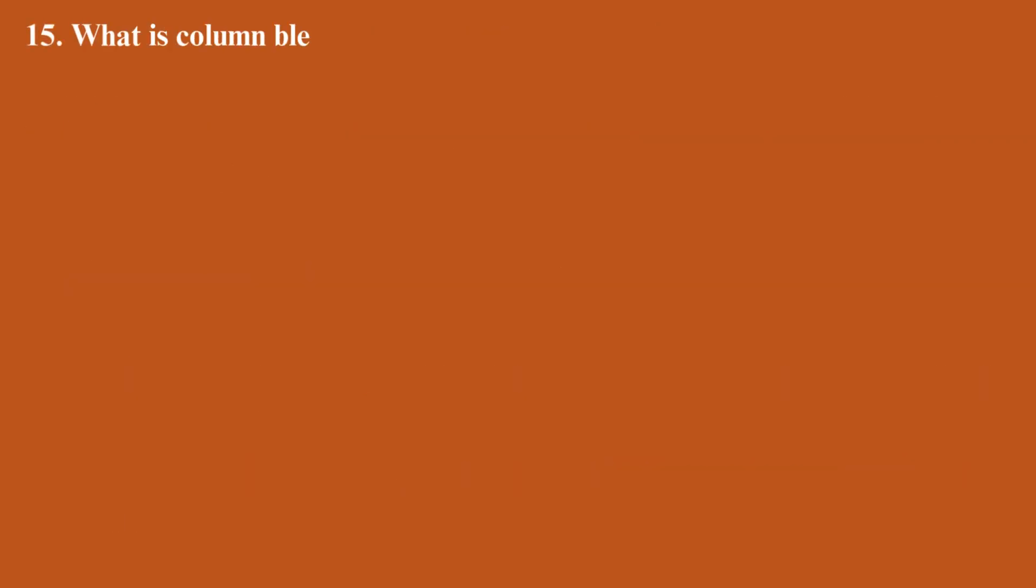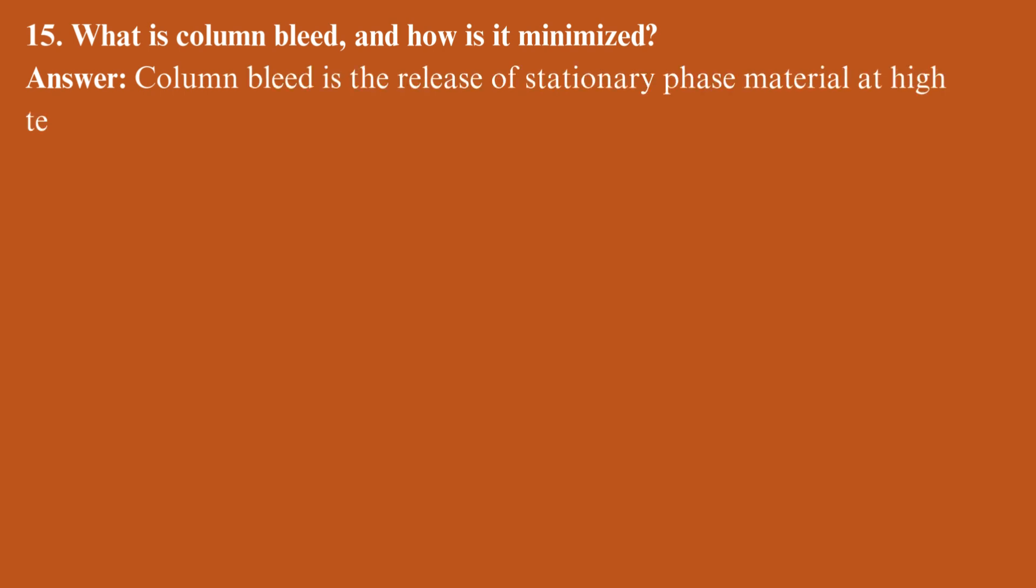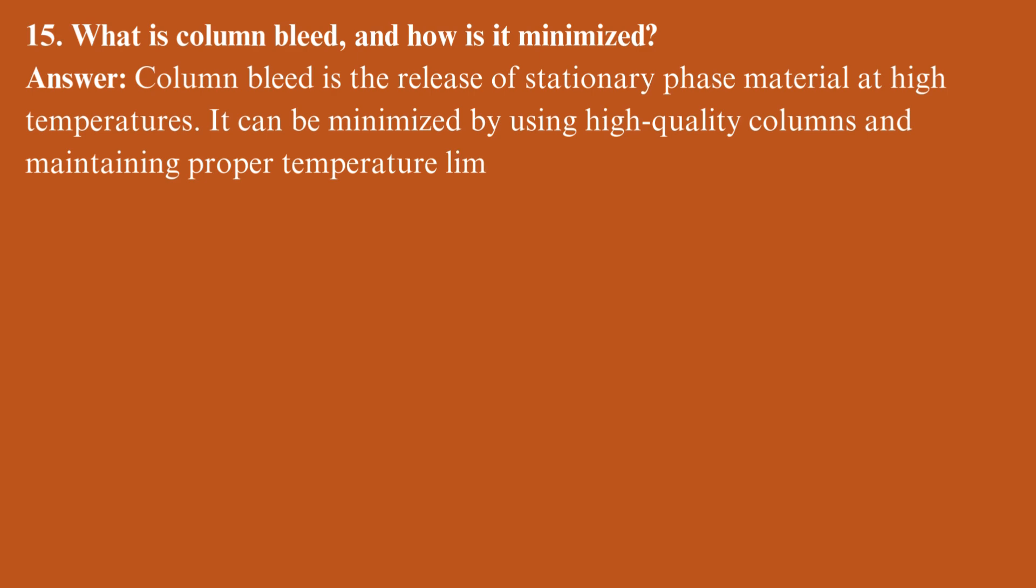What is column bleed, and how is it minimized? Column bleed is the release of stationary phase material at high temperatures. It can be minimized by using high-quality columns and maintaining proper temperature limits.